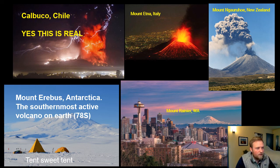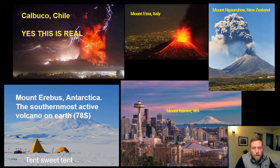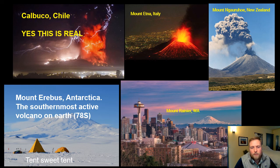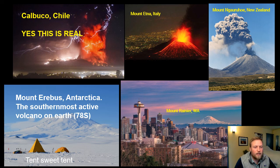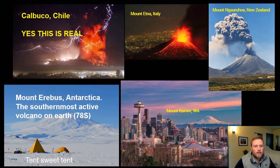Here are some cool pictures of stratovolcanoes around the world. Famous ones include volcanoes in Chile that create insane volcanic lightning when they erupt, Mount Etna in Italy on the island of Sicily, Mount Ngauruhoe — which is Mount Doom in Lord of the Rings — in New Zealand, Mount Erebus which is the southernmost active volcano on Earth with an active lava lake in the middle despite being covered in glacial ice, and Mount Rainier, probably the most famous stratovolcano in the United States and the backdrop for Seattle, Washington. Hopefully that gives you enough background to get started with Google Earth and recognize the broad differences between stratovolcanoes and shield volcanoes.